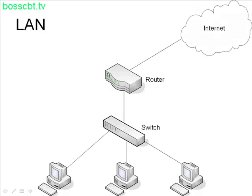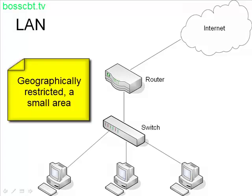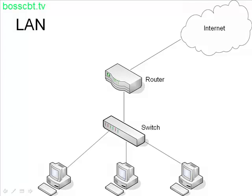So this is a local area network. In this case, we just have a few PCs on a switch with a router and we have internet access. The primary characteristic of a local area network is that geographically speaking, it's pretty restricted. So it could be a small office, or it could be one floor of many floors in a building — perhaps the entire building is a local area network. But generally speaking, it's relatively small.